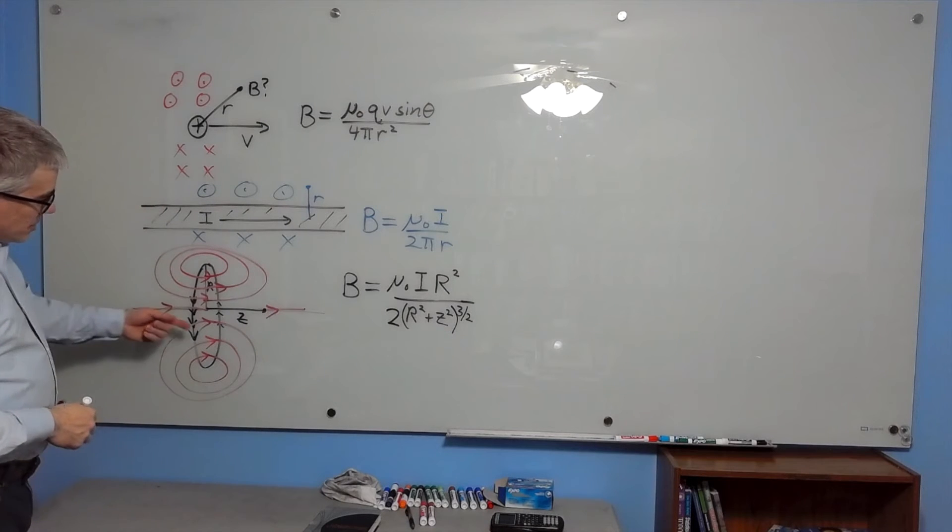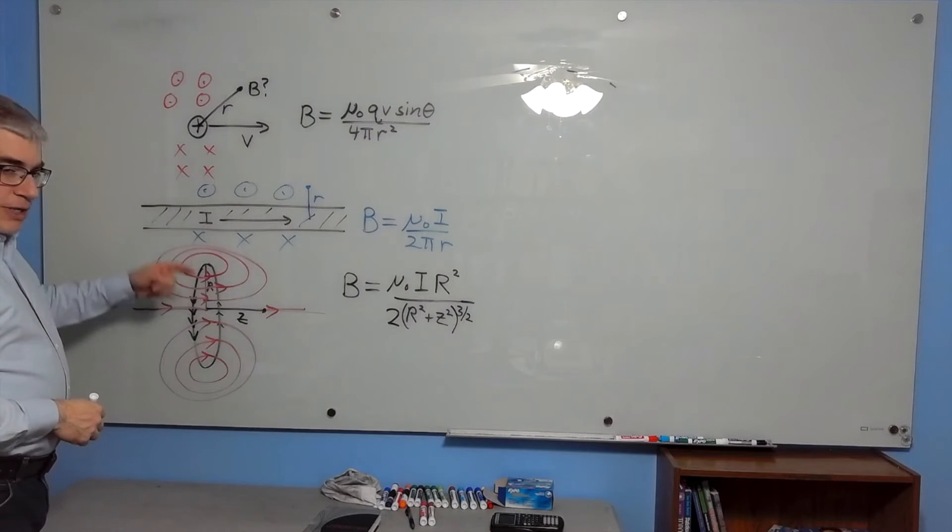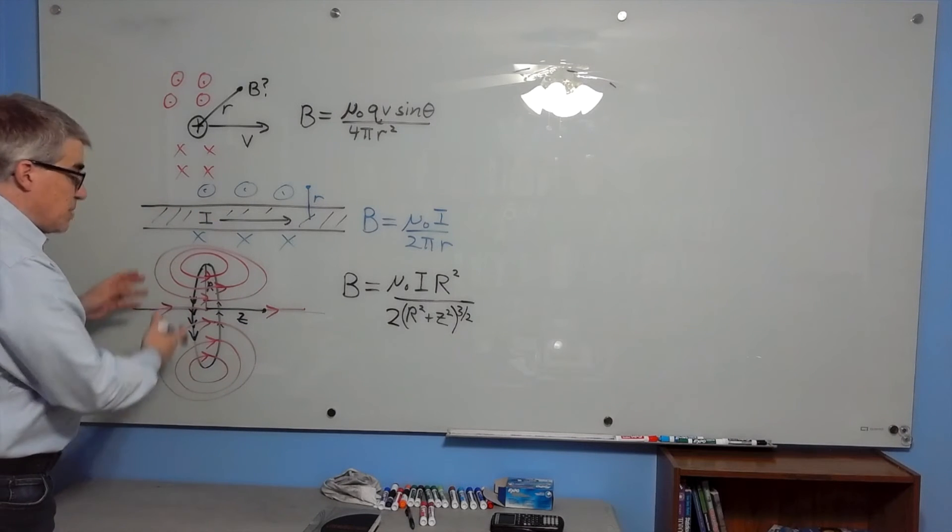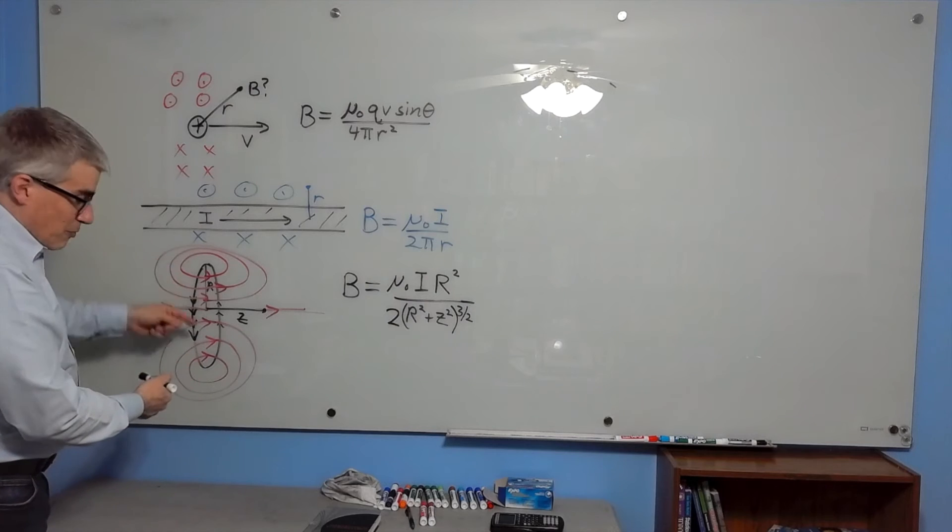Now, fancier one. If you have a loop of current, the magnetic field swirls around it like this, which looks just like a magnet because that's what magnets are made out of. They're made out of little loops of current.